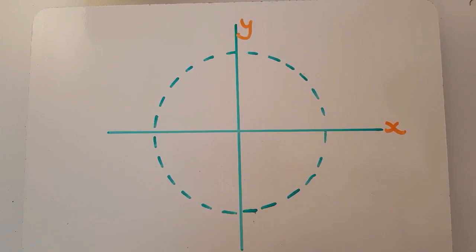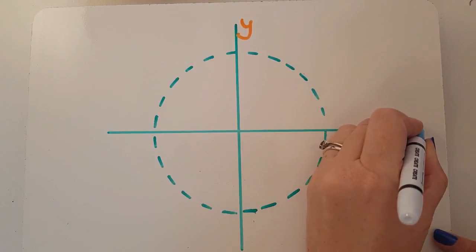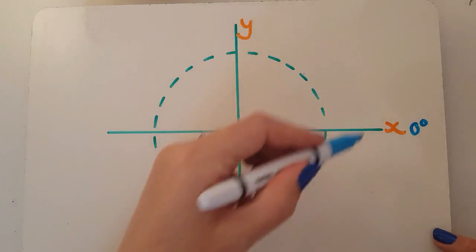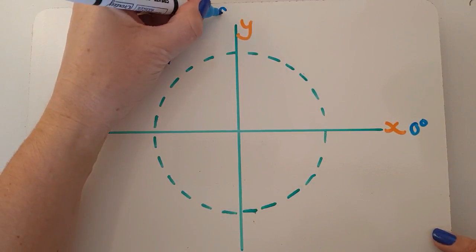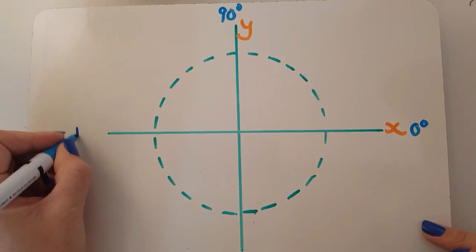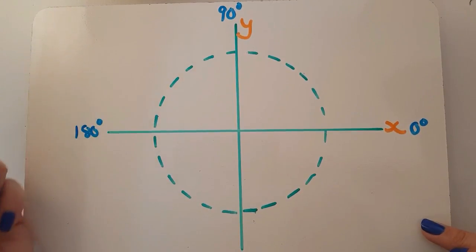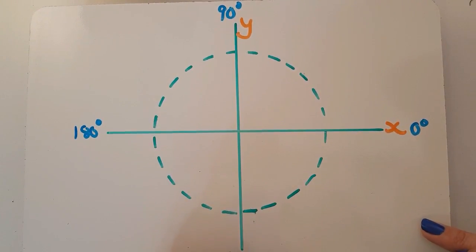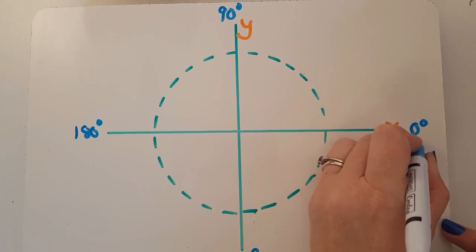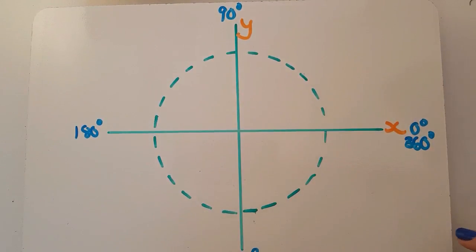And then the other thing to consider is we're going to label the degrees. So here along the x-axis this is going to be 0 degrees, going up there it's obviously 90, here we've got 180 and here 270, and 0 and 360 are the same thing. So you've got to get your head around the fact that these things are happening at the same time.